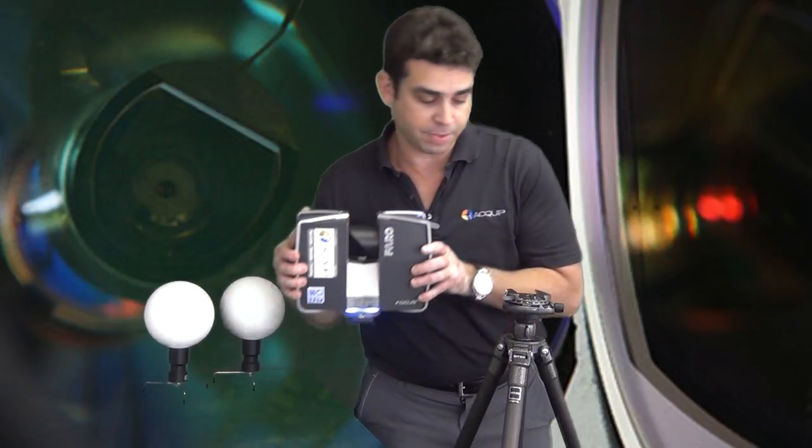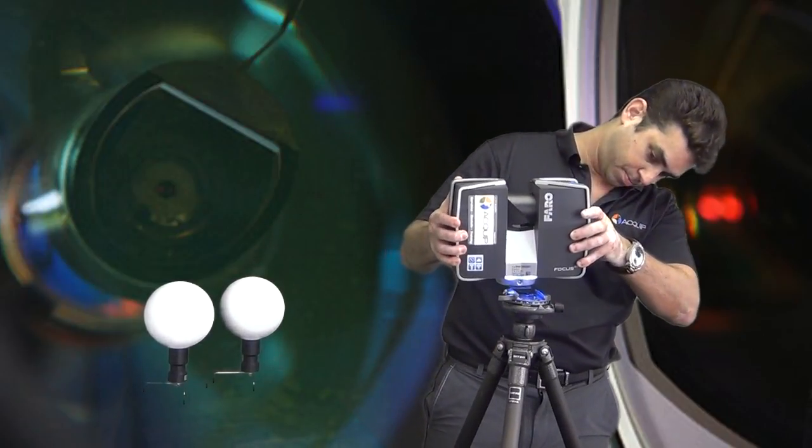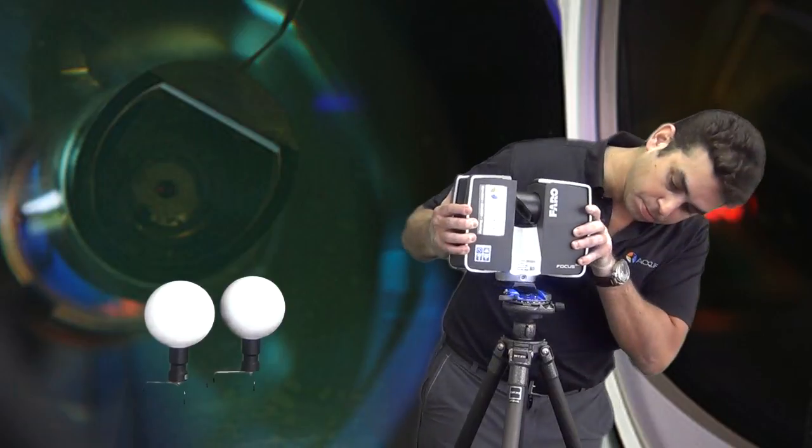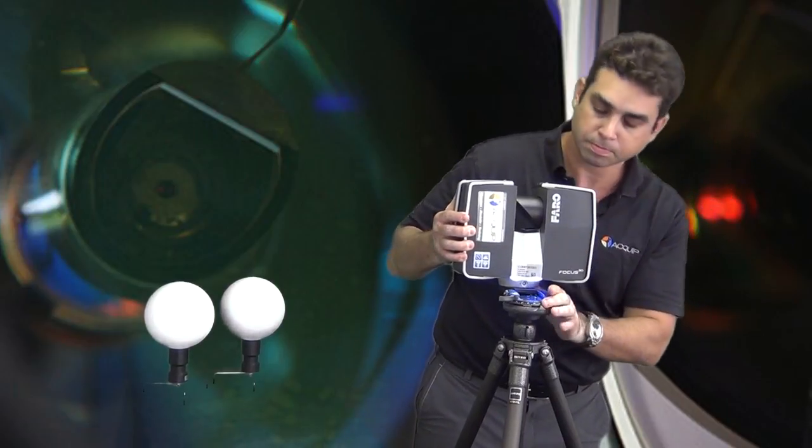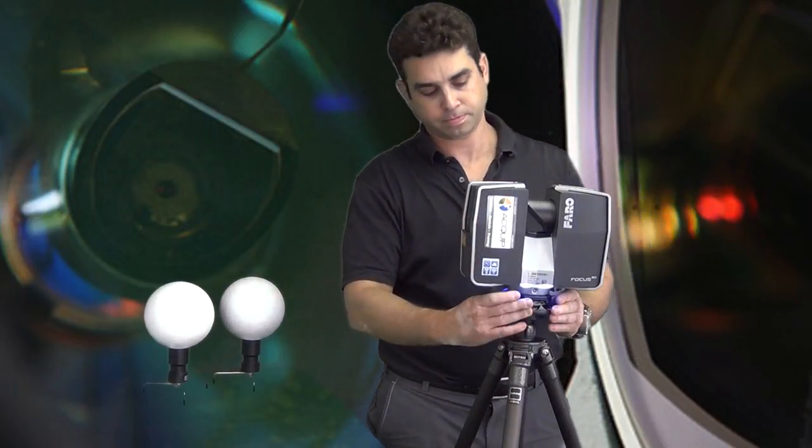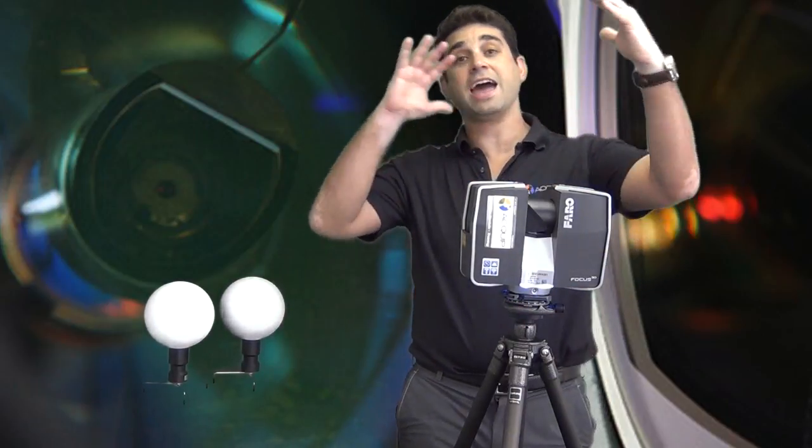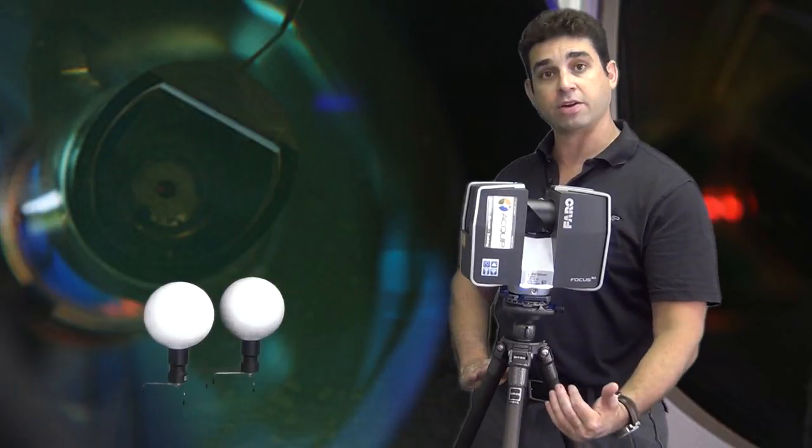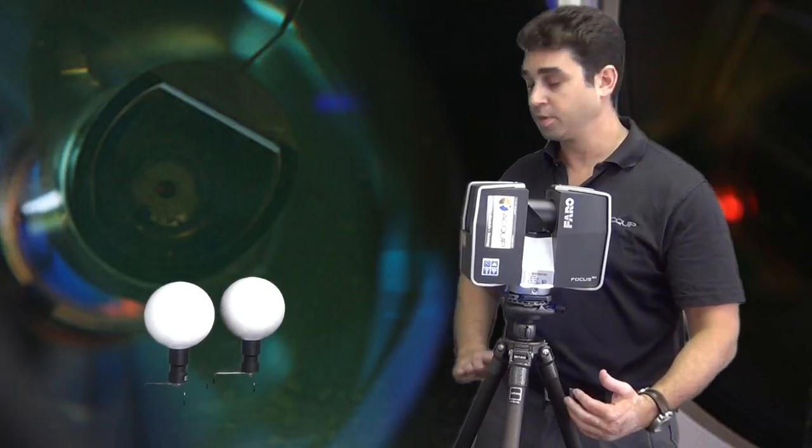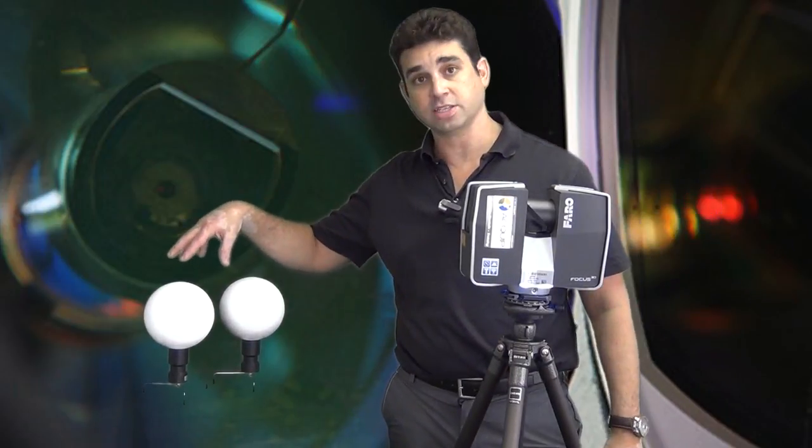We simply clip it on to the tripod and the scanner will scan everything around it minus this small area down here at the bottom of the tripod. We use these targets in order to link multiple scans together.